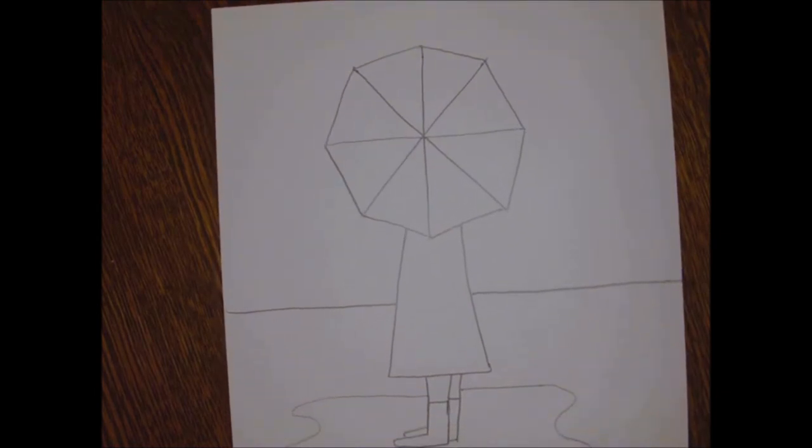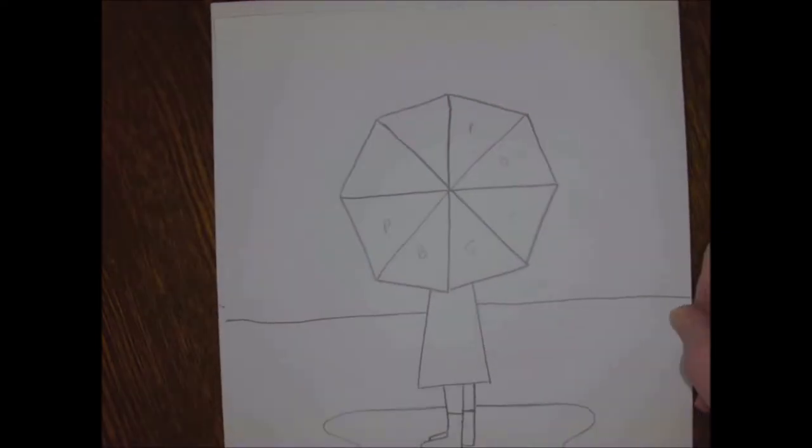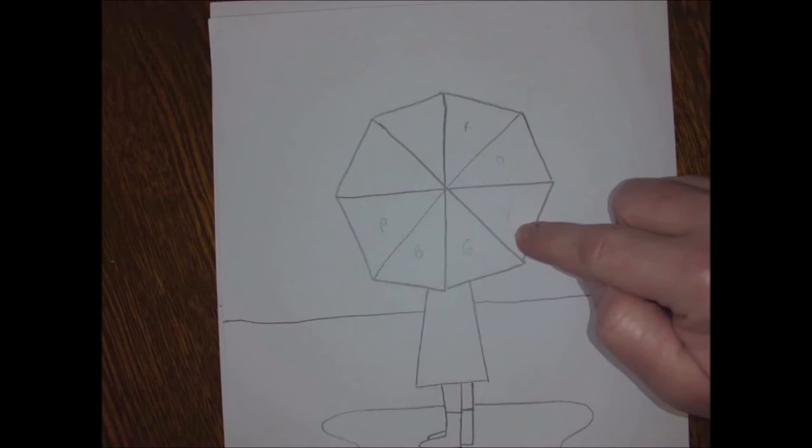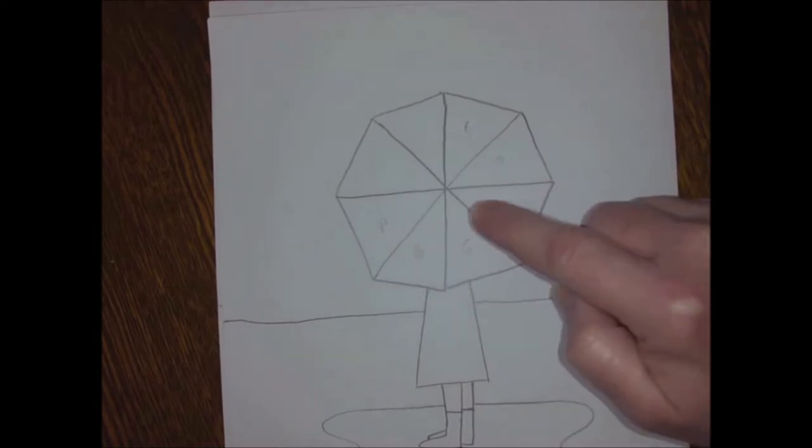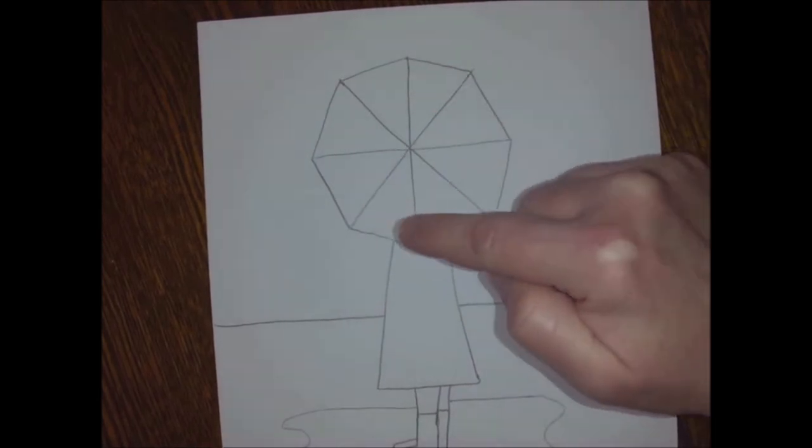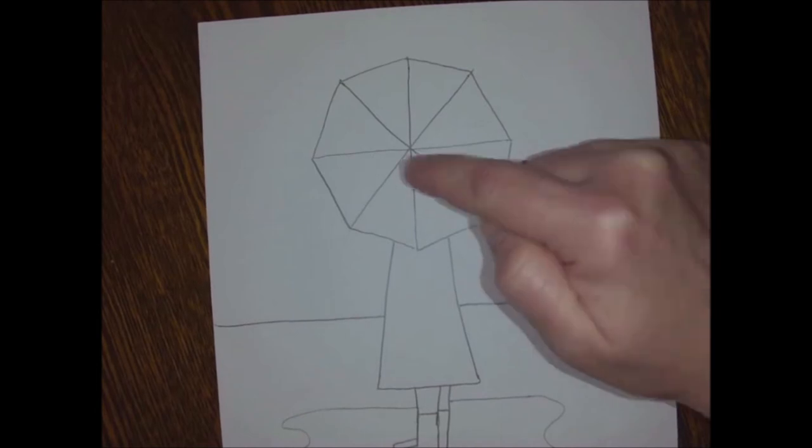And sometimes I like to do something like this: I like to put like an R for red, an O for orange, Y for yellow, so I kind of have it in order. But you don't even have to follow the order, as long as you have got somewhere in here red, orange, yellow, green, blue, and purple.